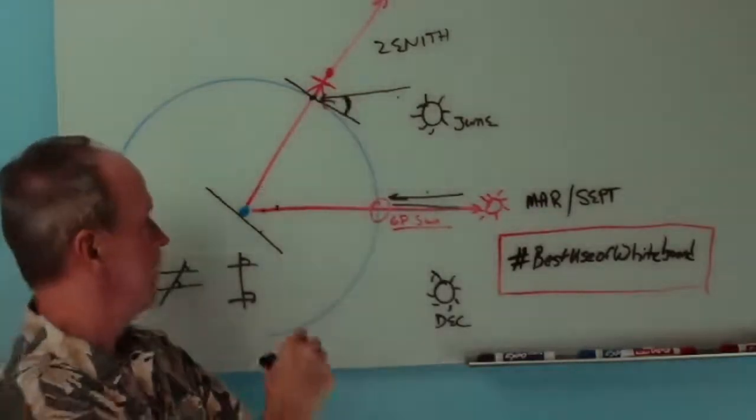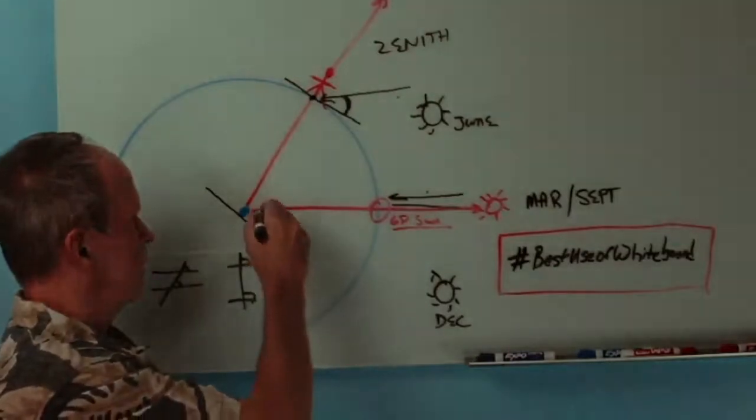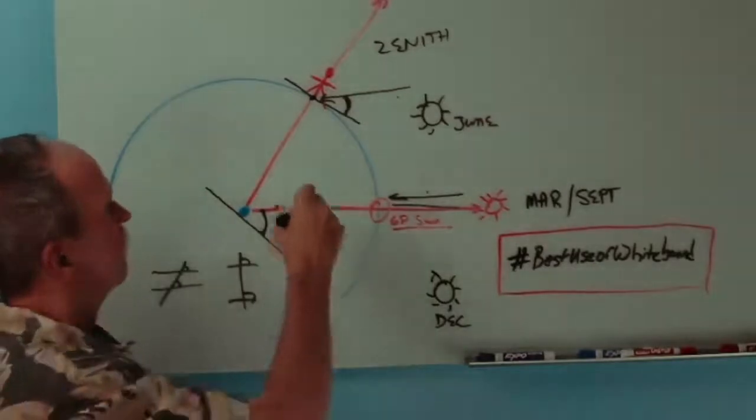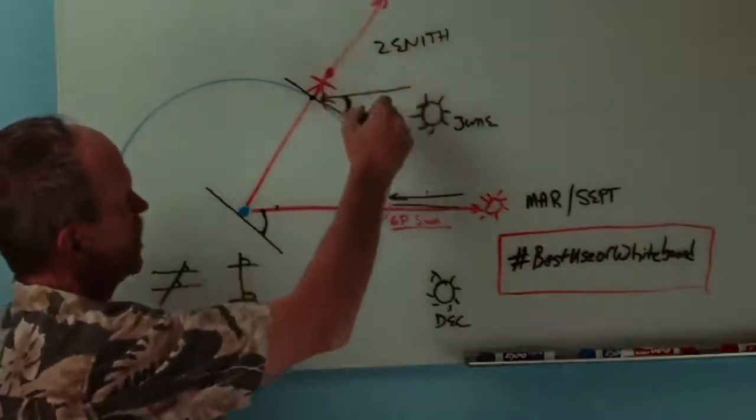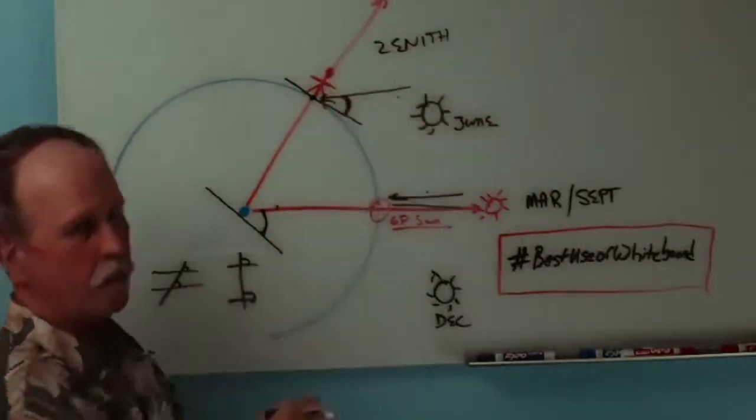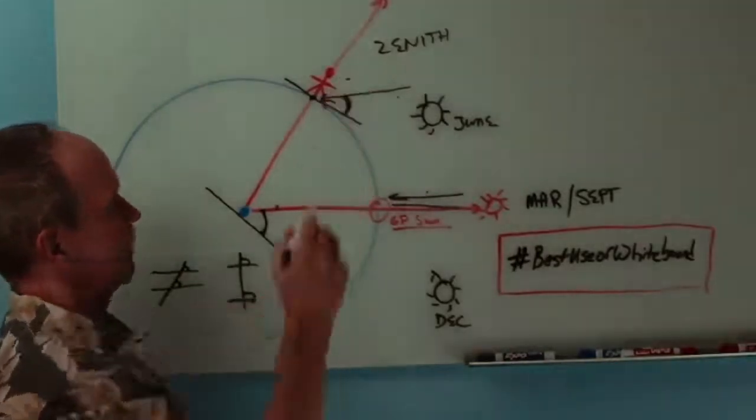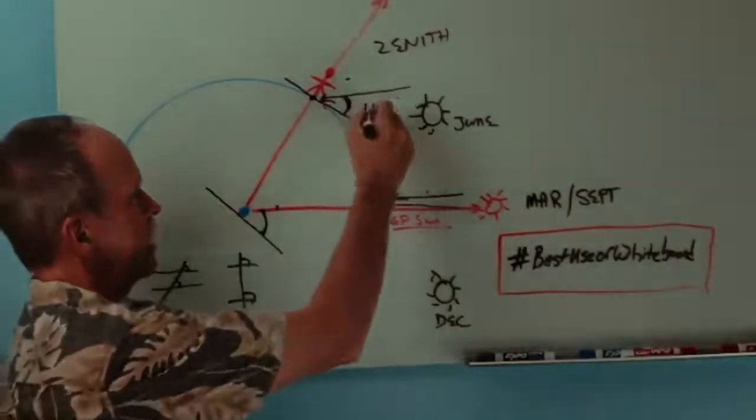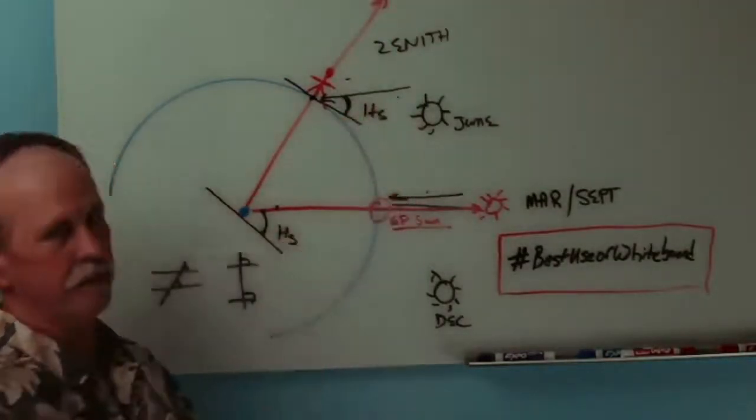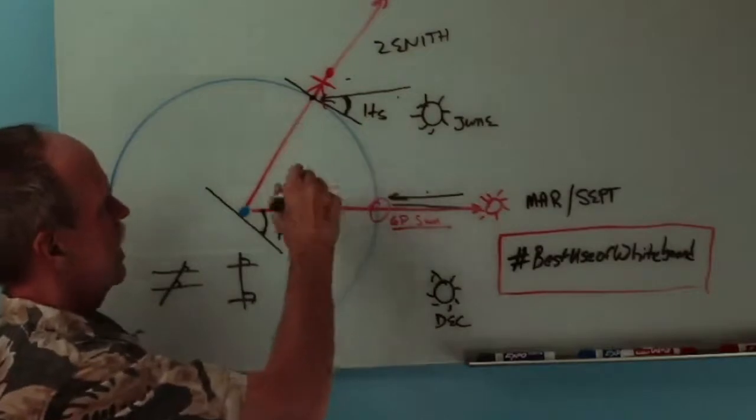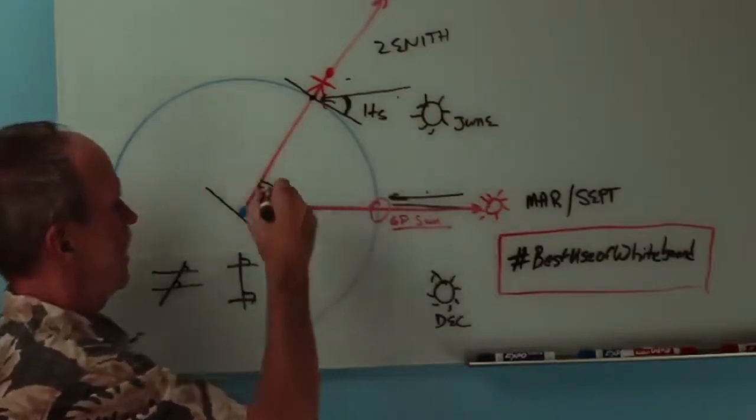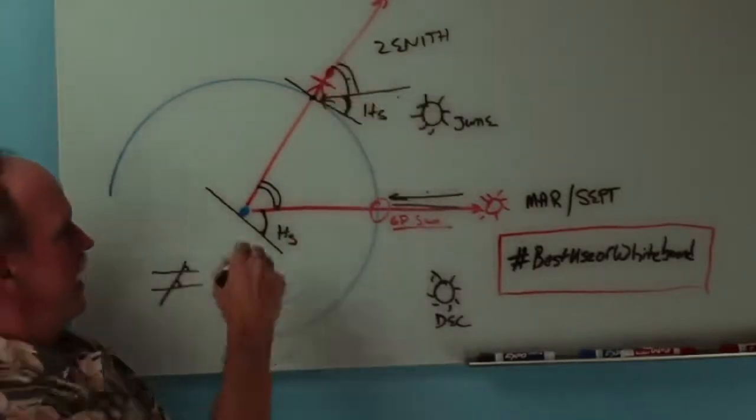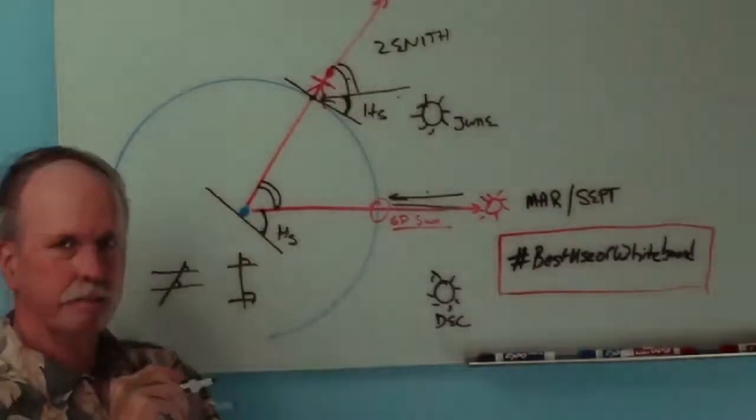So, where's that angle down here? Well, it's right here. These are exactly the same angle. Now, this is a 90 degree angle to our horizontal line. So, what is this angle right here? Well, it's 90 degrees minus Hs, which is the angle we measure from our sextant. If we subtract that from 90, we get that angle right there. And that would be that angle right there. That determines our latitude.